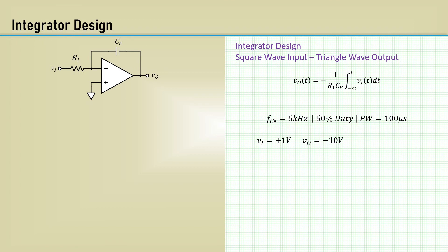We will let the feedback capacitor equal 0.01 microfarad. Rearranging the integrator equation to solve for R1, this yields 1 kOhm.